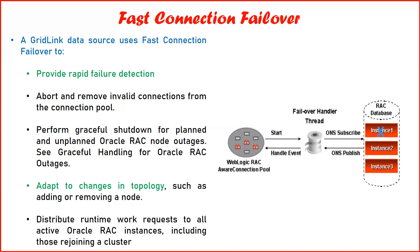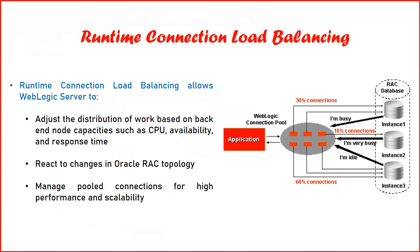When we configure the active grid link data source, for the database connection we do not specify the IP address of each database node. Instead we define the SCAN IP — the SCAN address — which is a feature of Oracle Database from 12c onward. Instead of multiple IPs, we specify only the SCAN DNS name in our data source configuration, and that SCAN is automatically mapped to all running database instances in the backend. Every time you add any instance to your RAC, it automatically gets populated in the connection pool and distributes runtime work requests to all active Oracle RAC instances, including those rejoining the cluster.